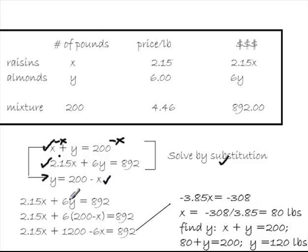Now what I do is I take what Y is equal to in the second equation and replace it with 200 minus X. When I multiply, since that is a binomial, I do two multiplications. Six times 200 is 1,200, six times X is 6X. And I wind up with 2.15X plus 1,200 minus 6X equals 892.